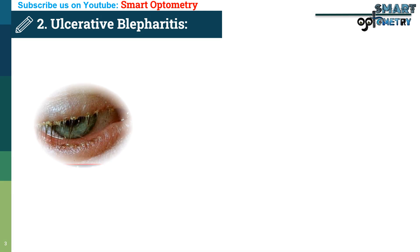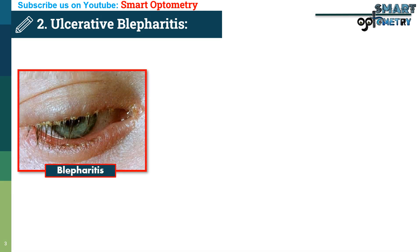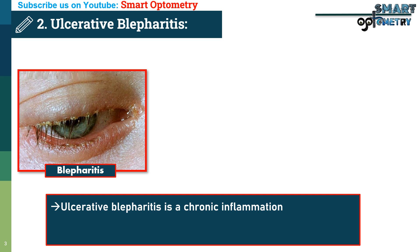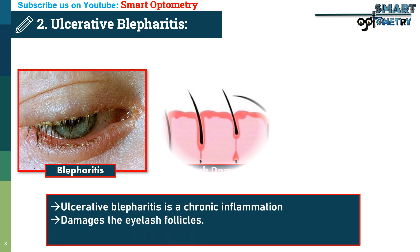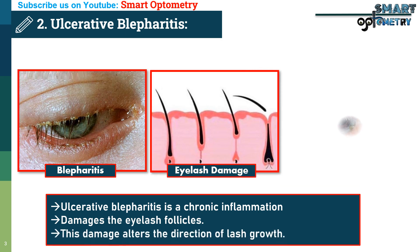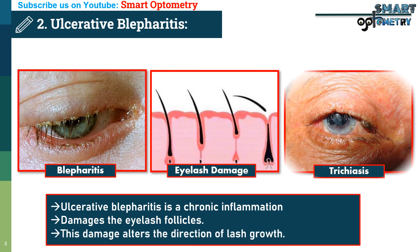2. Ulcerative blepharitis. Ulcerative blepharitis is a chronic inflammation of the eyelid margins that damages the eyelash follicles. This damage alters the direction of lash growth, leading to trichiasis.